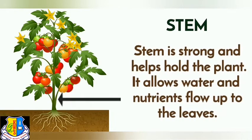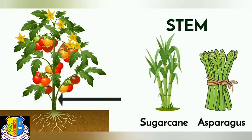Stem. Stem is strong and helps hold the plant. It allows water and nutrients to flow up to the leaves. Some examples of stems we eat are sugarcane and asparagus.